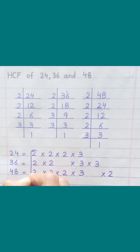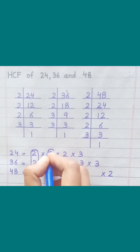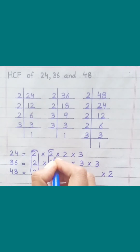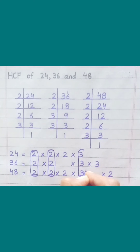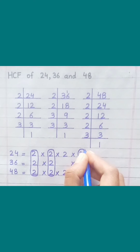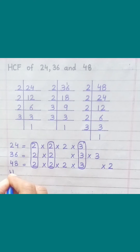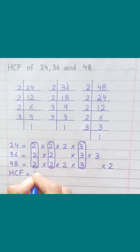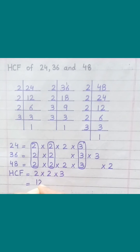Loop the factors that are common to all of the given numbers. HCF equals 2 multiply 2 multiply 3 equals 12.